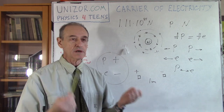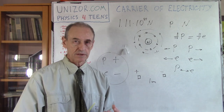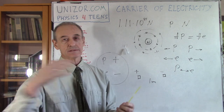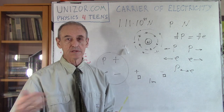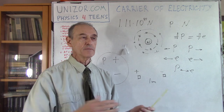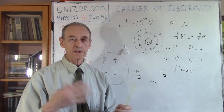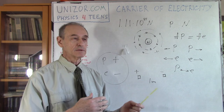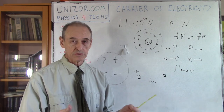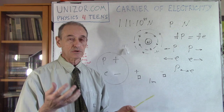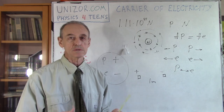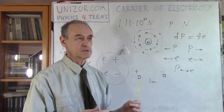Electrons are the carrier of electricity. Absence of electrons in one place means there is an excess of electrons in other places. As long as electrical charge is not equal to zero — meaning it's not neutral — then there will be a certain electrical force between the objects.